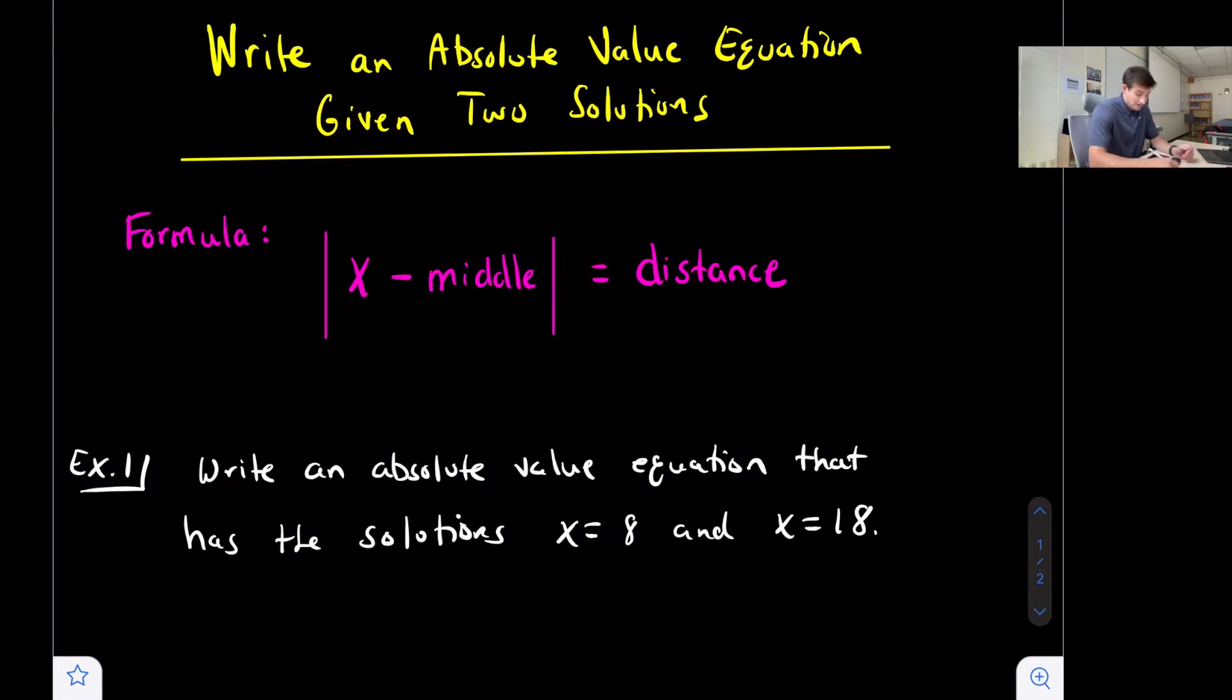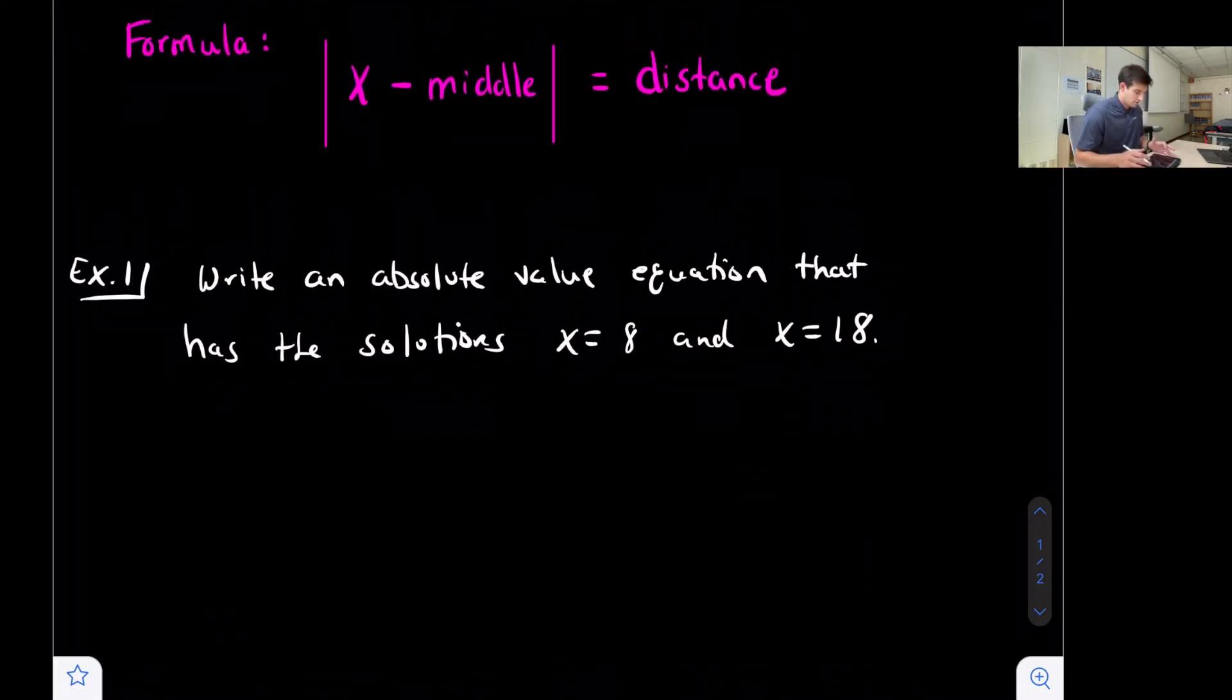X is just our variable, so any variable that we would want to use there, always subtraction. By middle we mean the number that is right between the two given solutions, like the average. To find that, just add the two solutions together and divide by two. By distance I mean the distance from each solution to the middle number.